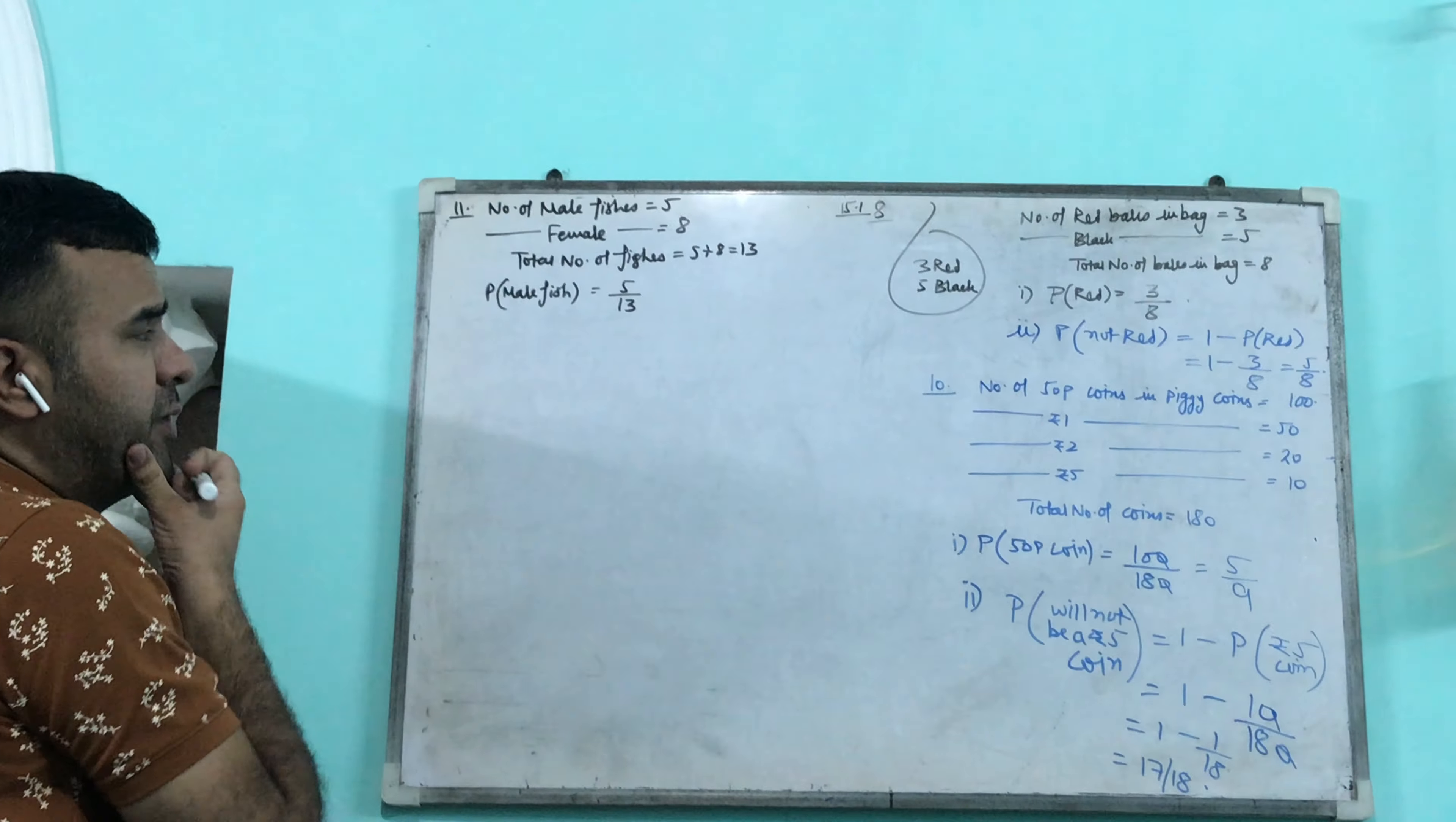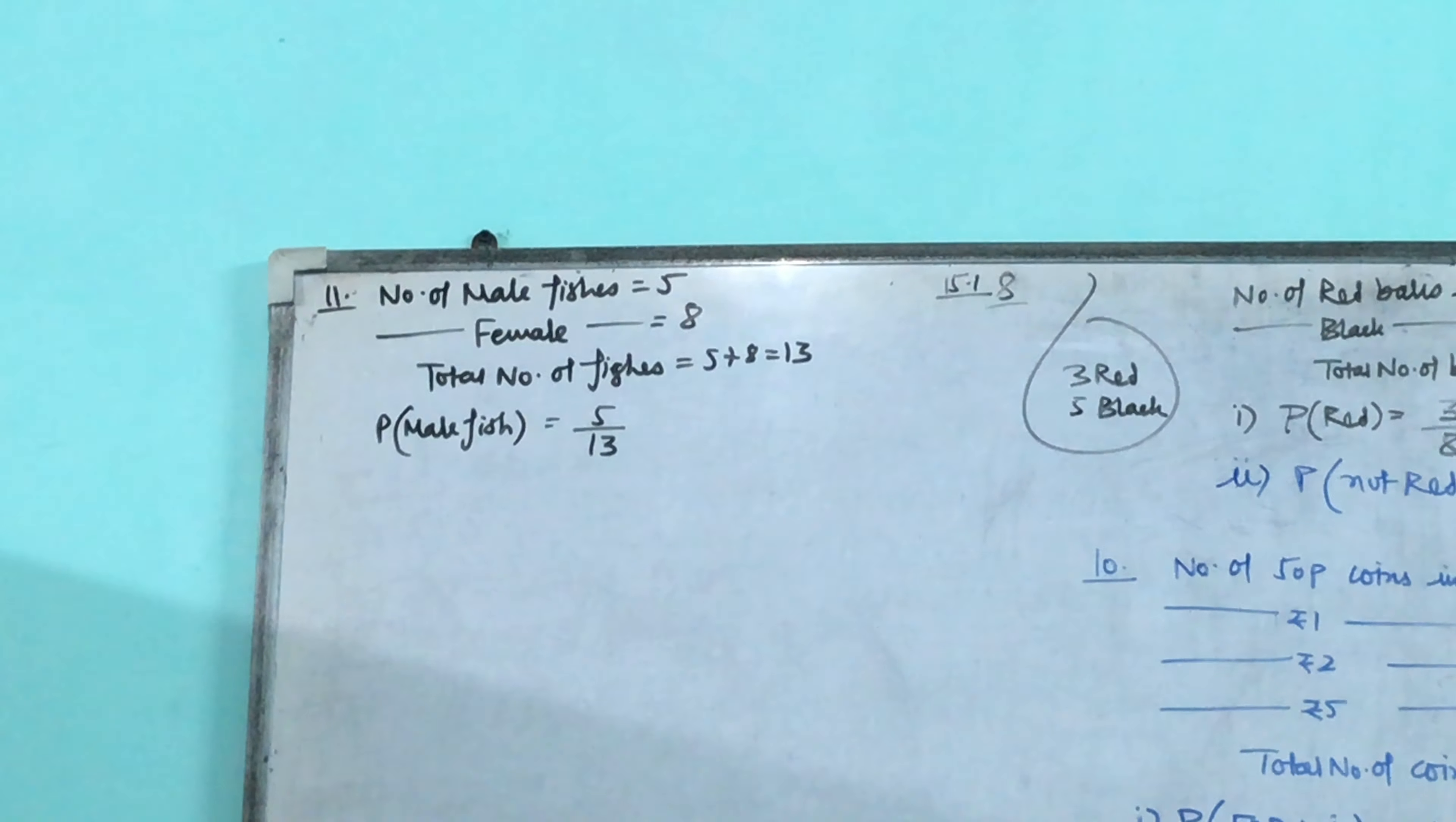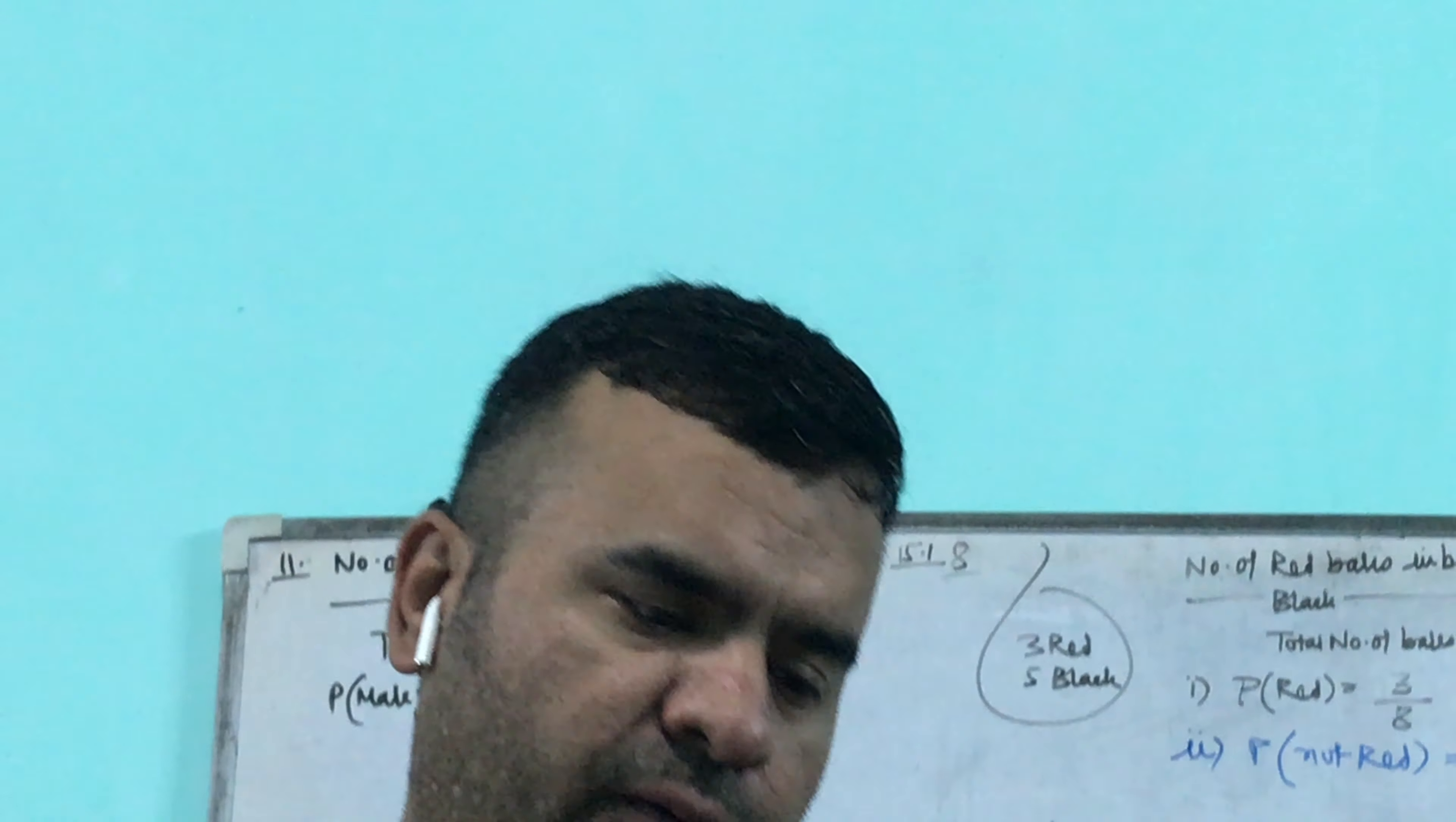In this question the number of male fishes were 5, the number of female fishes were 8, total number of fishes were 13. The probability of getting a male fish is number of favorable outcome upon total possible outcome, which is 5 by 13. So class 11 very easy, 12th is also easy, you can also tell me. I will tell you the 13th and 14th, 12th is homework.